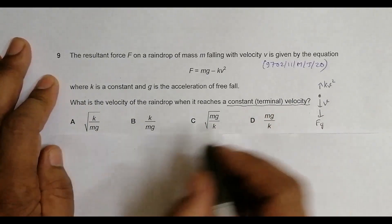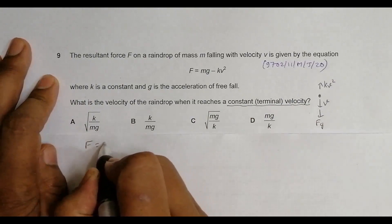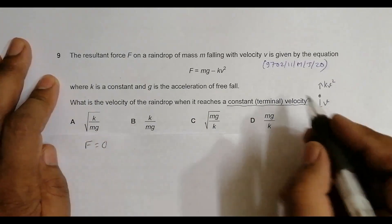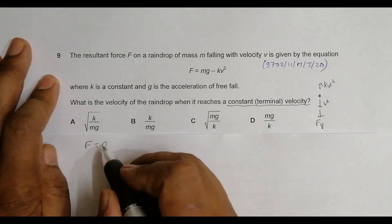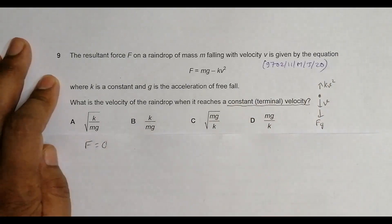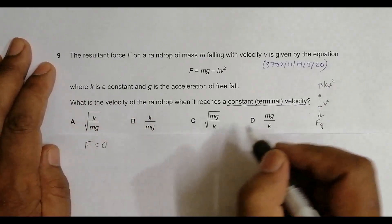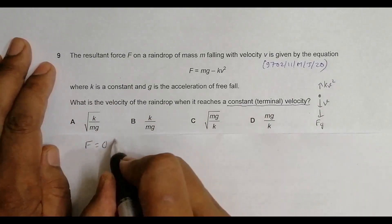When it attains terminal velocity, we have F equals 0 because at this time acceleration equals 0. Acceleration equals 0 means that the resultant force on the body should be equal to 0 because that is what is said by the second law of motion. The resultant force is equal to mass into acceleration.